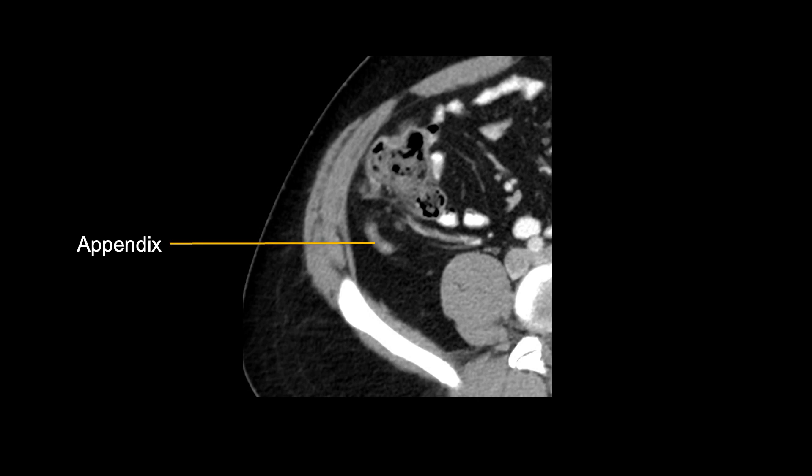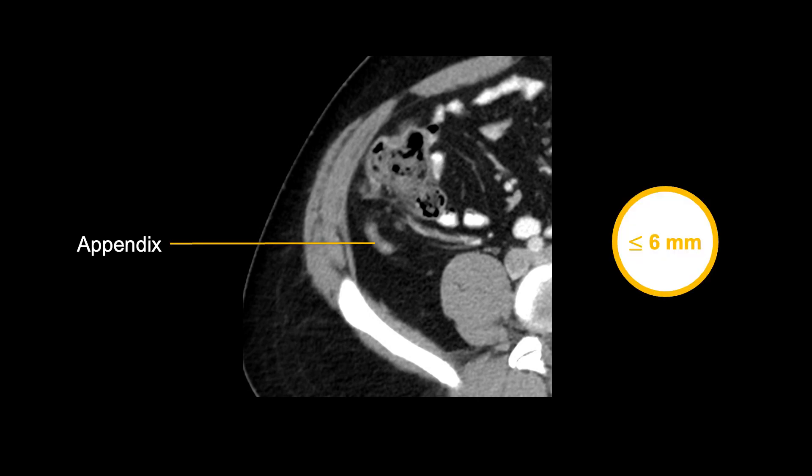The normal appendix is usually 6 mm or less in diameter, with a clean or dark appearance of the surrounding fat. Notice how the fat surrounding the appendix looks similar to the body wall or other areas in the abdomen.